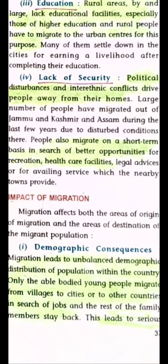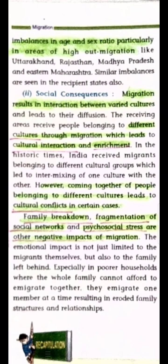Particularly in areas of high out-migration, when younger people leave their families for work in another village, city, or country, the rest of the family — comprising senior citizens and children — stays back. The youth leaves and migrates somewhere else, causing demographic imbalance in age and sex ratio. This has happened in places like Uttarakhand, Rajasthan, Madhya Pradesh, and Eastern Maharashtra.